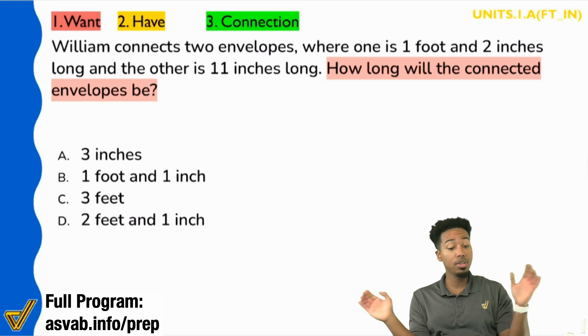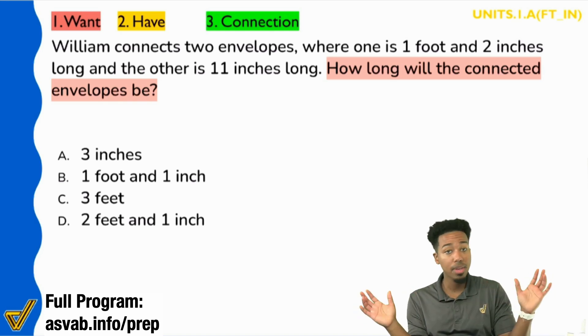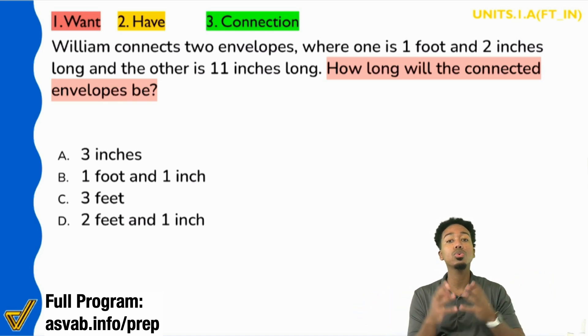So again, I didn't ask you anything about conversions, didn't ask you anything about that at all. I'm just sticking to the first step. What am I supposed to find? Not how am I supposed to do it, converting and all that. No, I don't care about that. What are we supposed to find? The connected envelopes length. And so it sounds like we're trying to add the length of those envelopes.